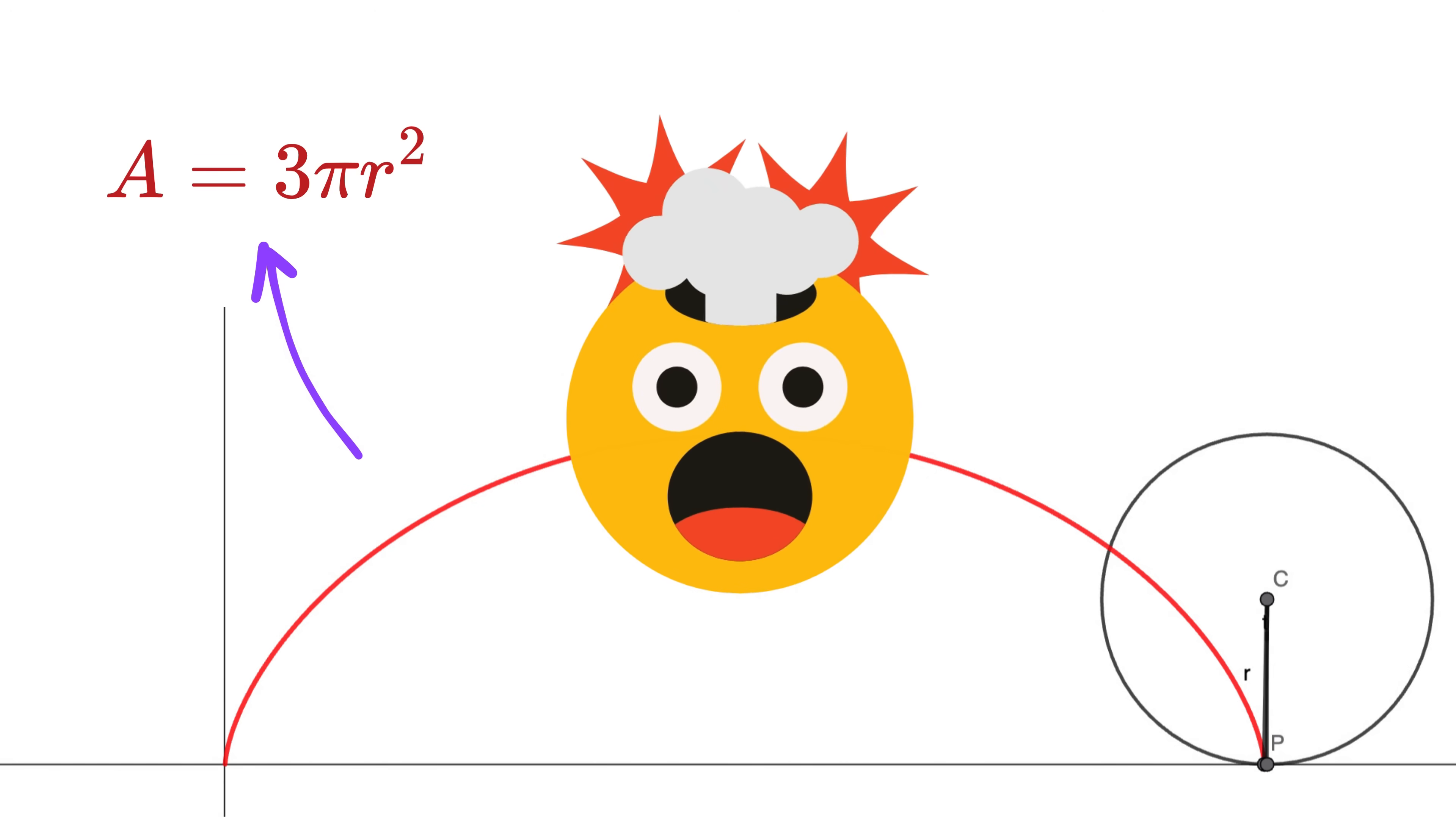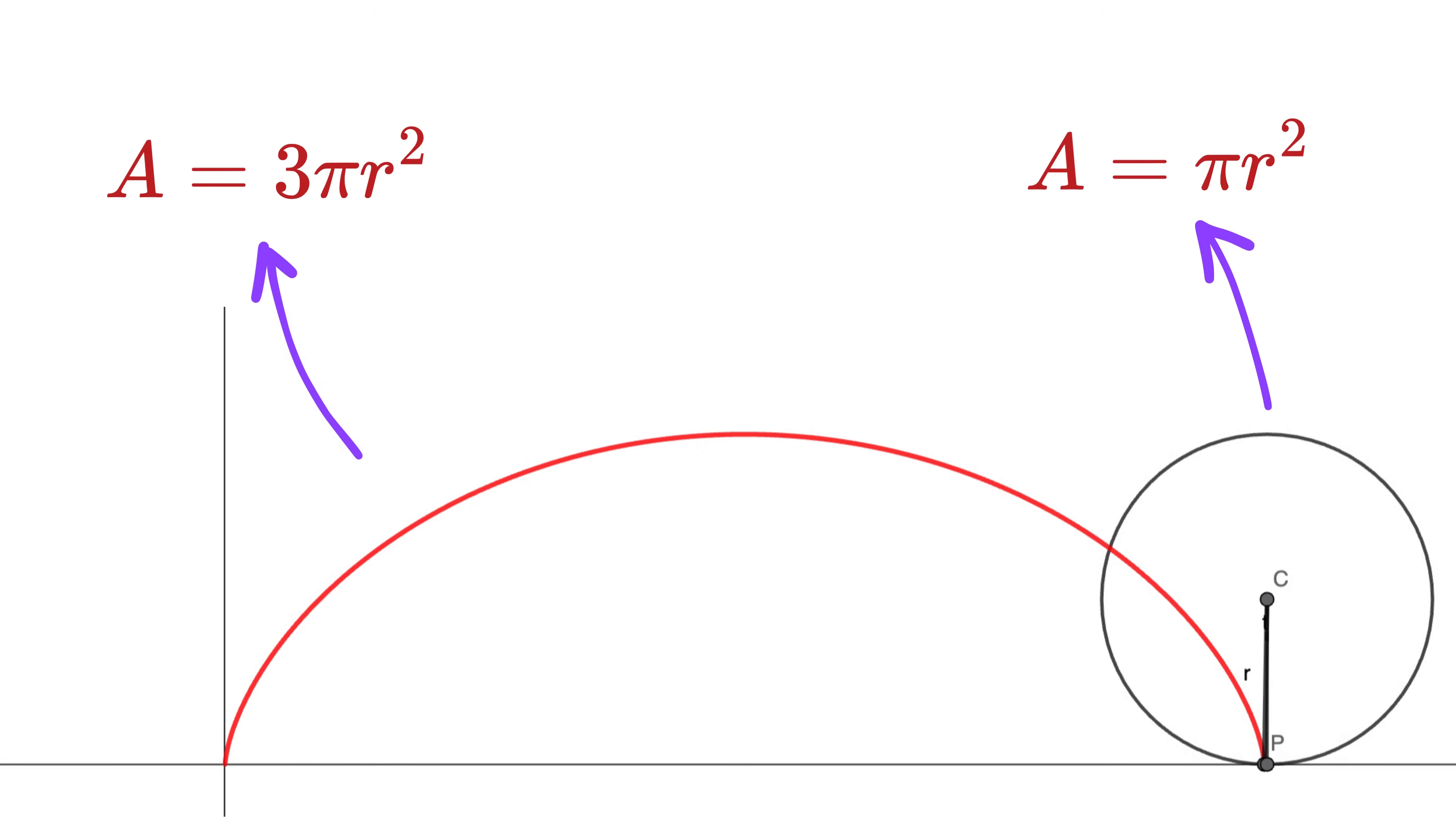Oh my God! The area of the circle that generated it is pi r squared, and thus the area under one arch of the cycloid equals 3 times the area of the circle that generated it. Isn't this super duper cool?